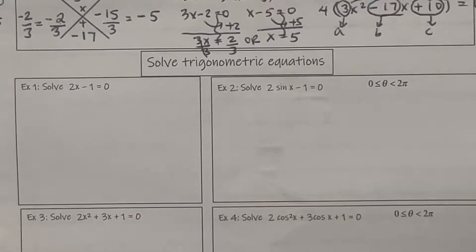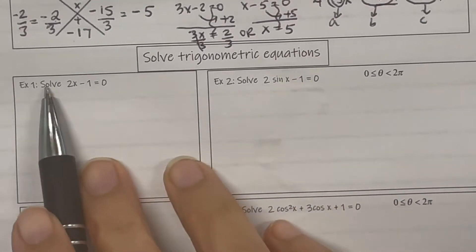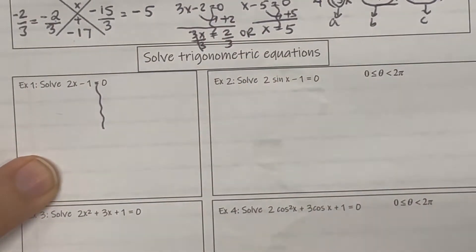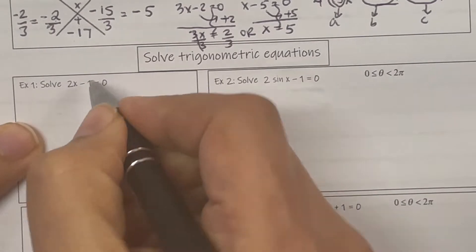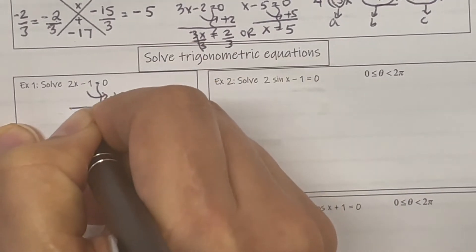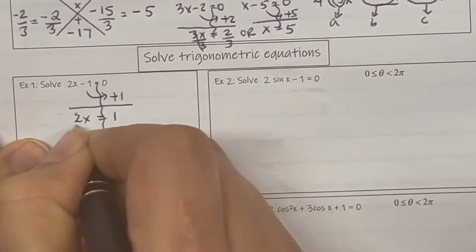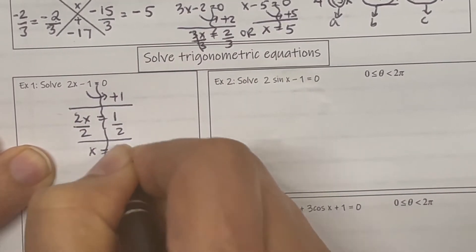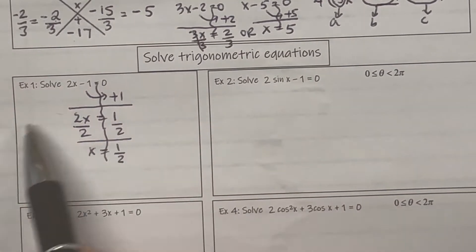We're going to take a look at solving trigonometric equations. How would you solve this question? You would take negative 1 to the other side, that would be plus 1, so you'd have 2x equals 1. Divide both sides by 2, so you have x equals 1 half.